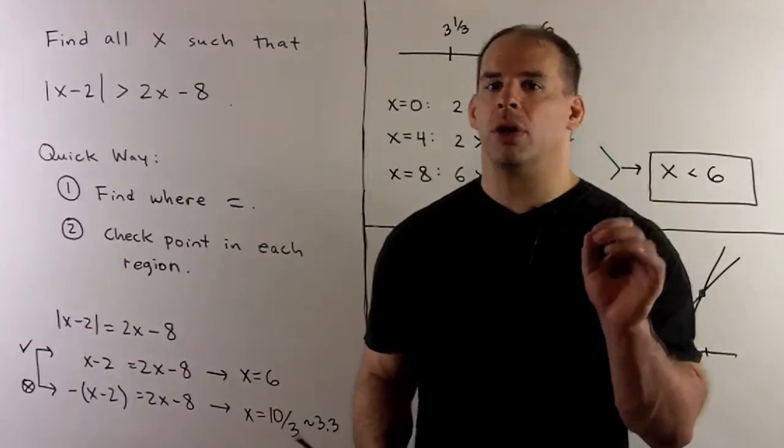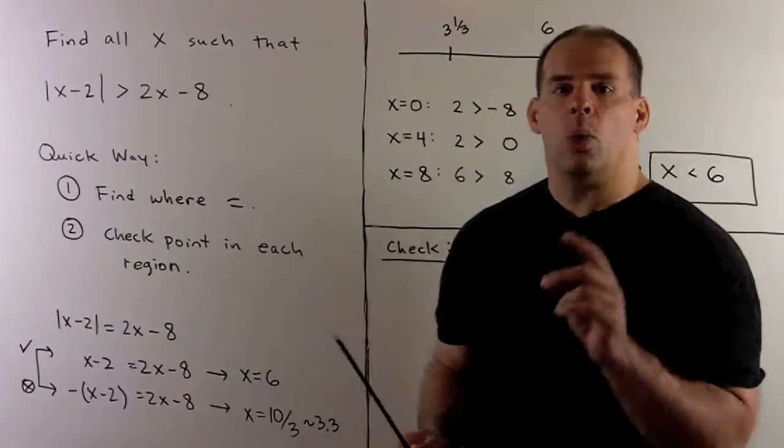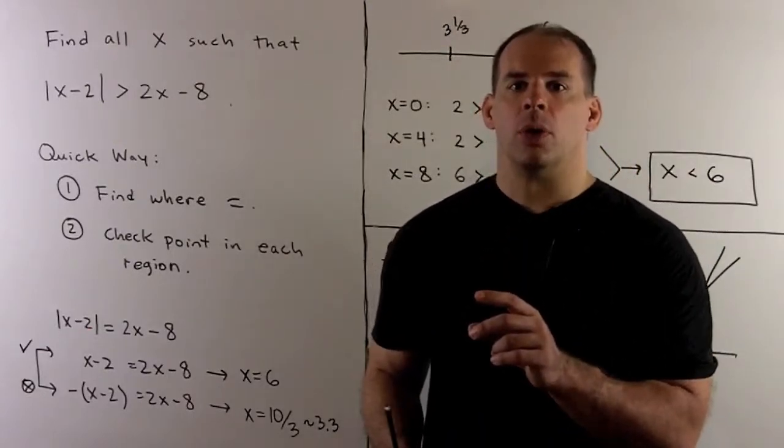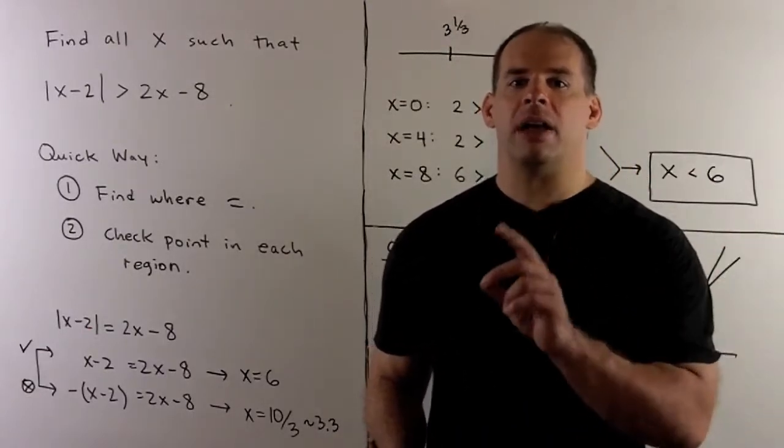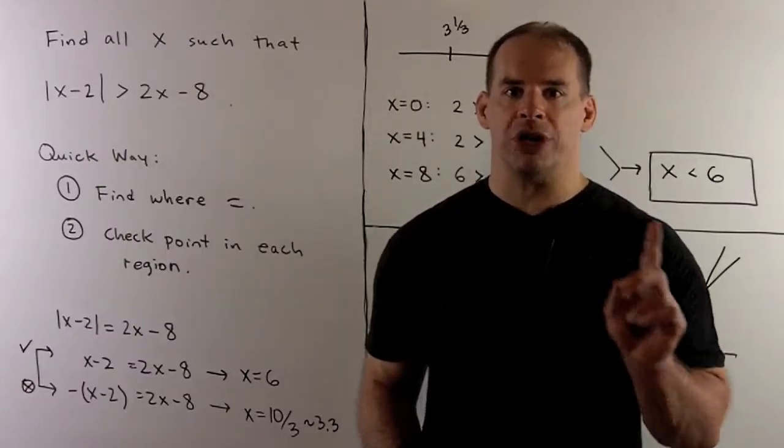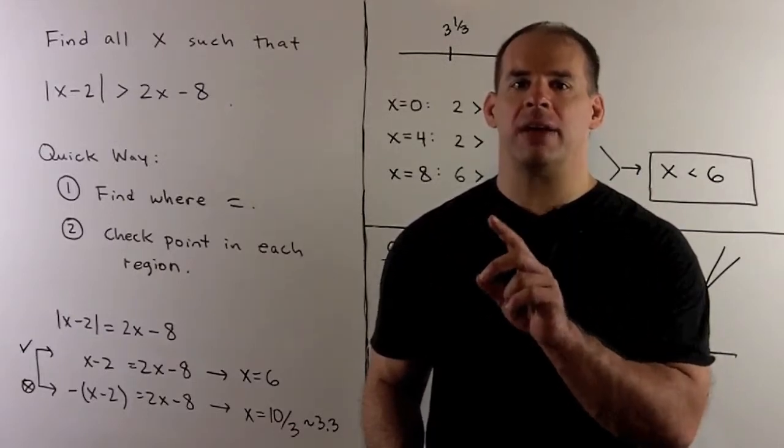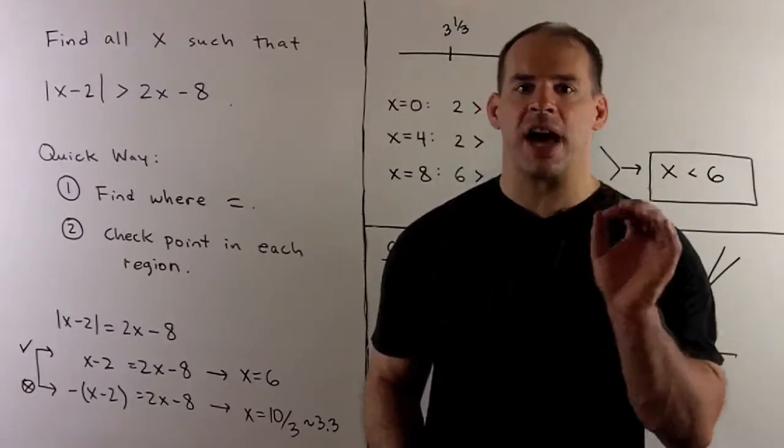Our first step is to find all the points where our two functions are equal. Once I have those points, we'll subdivide the real line. Then it'll be enough just to check for greater than or less than for one point in each region. By continuity, we'll have greater than or less than for the entire region decided by that point.